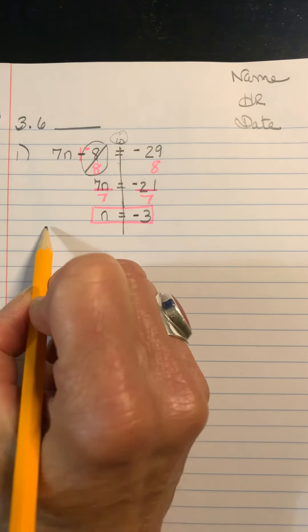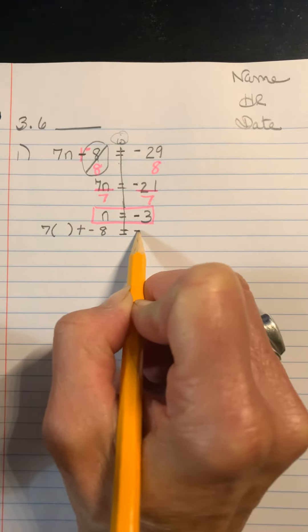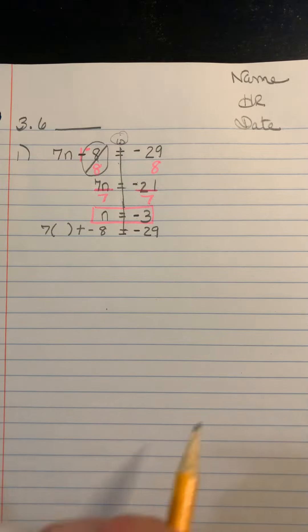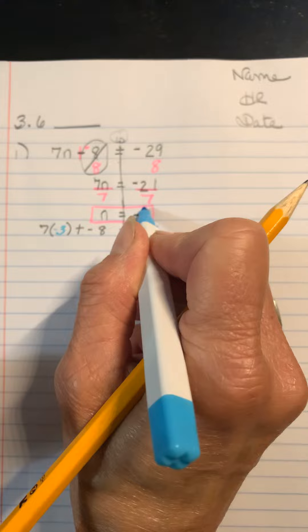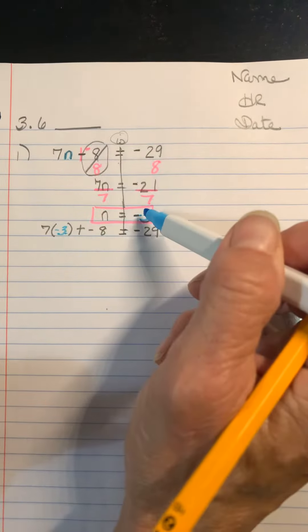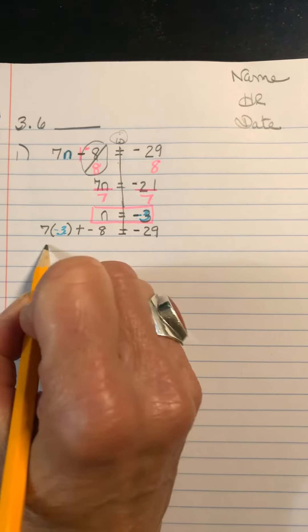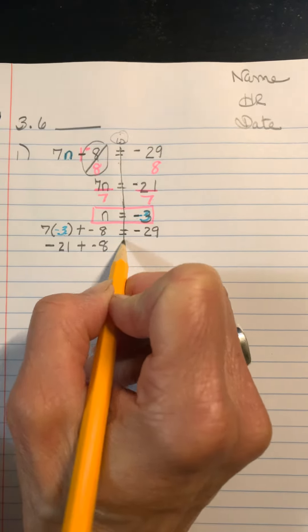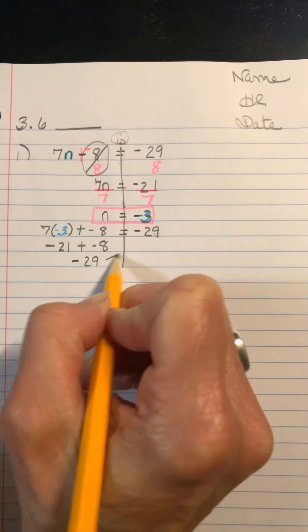Rewrite the problem. 7 times n plus negative 8. You want the left side to equal the right side. Plug in your solution in place of n. So substitute right there. So that negative 3 drops down there. It came from the n. So the n becomes a negative 3, becomes the replacement, the substitution. Negative 21 plus negative 8. Your goal is to make sure that it equals negative 29. And it does.